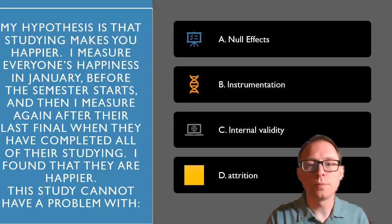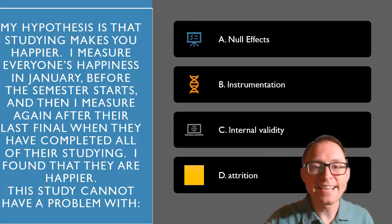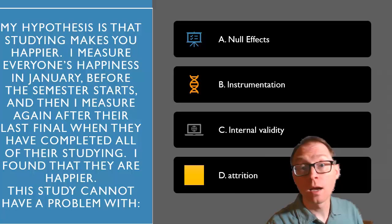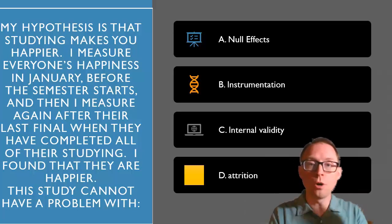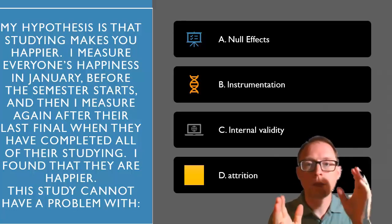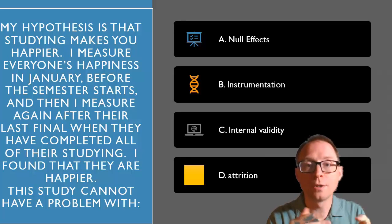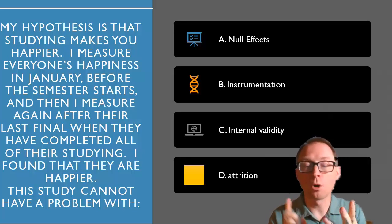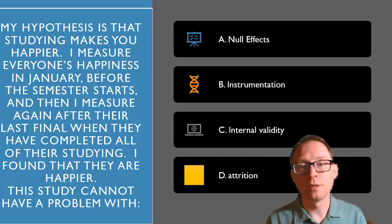One last question: my hypothesis is that studying makes you happier. I measured everyone's happiness in January, then again after the last final, and found they are happier. This study cannot have a problem with null effects. Null effects means no effect of studying on happiness — if I conclude there's no difference, that's a null effect. In this case, I found they're happier, so I've already rejected the null. I could have had problems with instrumentation, internal validity, or attrition — those are all explanations for internal validity problems. But I cannot have a problem with null effects because I have already rejected the null.